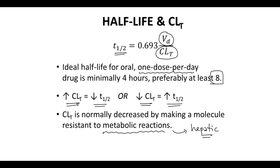When you make a drug resistant to metabolism, sometimes you call this hardening a molecule. Hardening a molecule requires identification and modification of the drug's soft spots. By removing the metabolic soft spots in a molecule, we harden the molecule, and therefore we will decrease clearance.